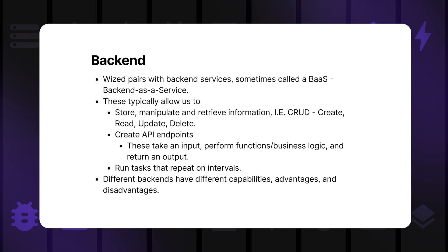That's that CRUD concept we talked about — create, read, update, and delete. These back-end services will usually allow us to create API endpoints: areas of the web app that we can send information to, with inputs, functions that are executed, and an output returned back to the front-end. We can also often set tasks to be repeated at certain intervals. For example, we created a booking engine for a client recently with a task that runs every 15 minutes to send reminders — if an event is 24 hours or two hours away, an email reminder gets sent. Those are often called cron jobs or repeating tasks. Different back-ends have different capabilities, advantages, and disadvantages.